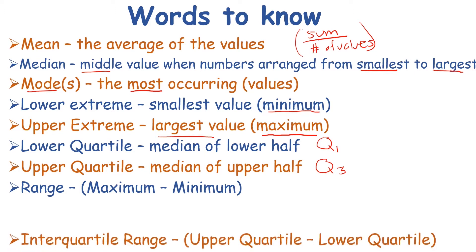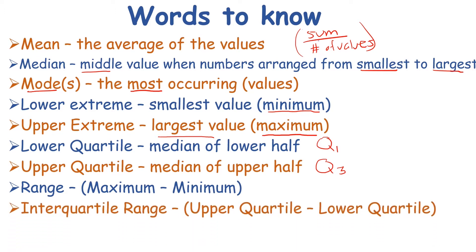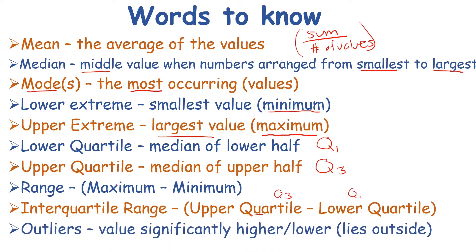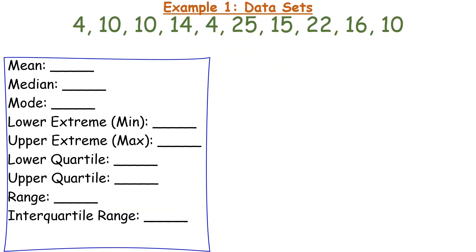Next you have the interquartile range — that is the difference of the upper quartile and the lower quartile, so Q sub 3 minus Q sub 1. Last we have outliers — that is a number that is significantly higher or lower than the rest of the data set. Think of outlier as outside; it is drastically greater or lower than the rest of the numbers.